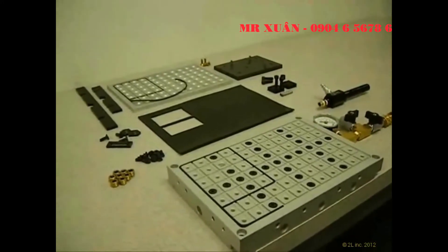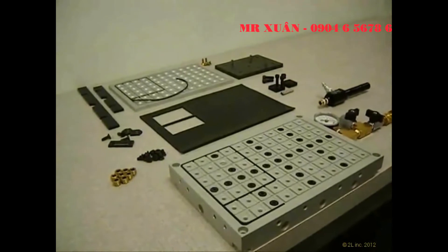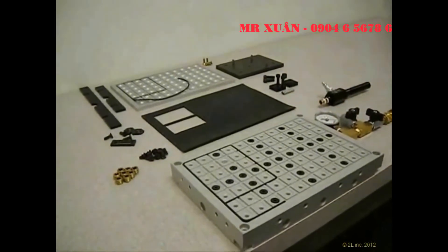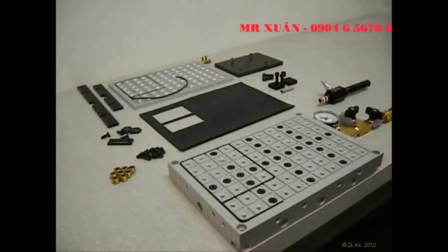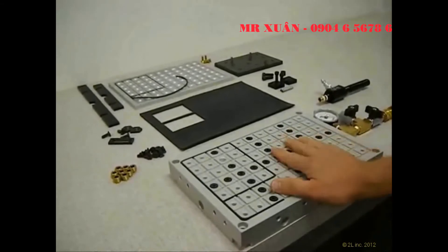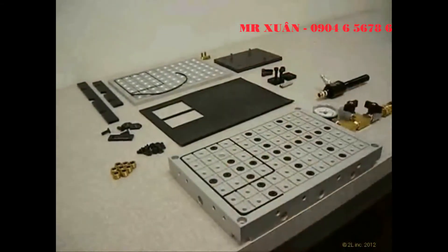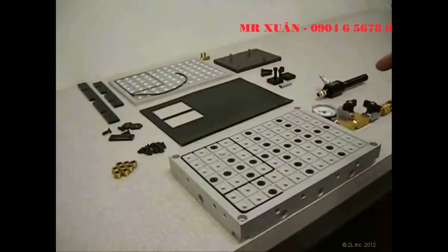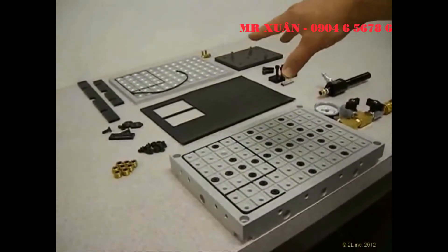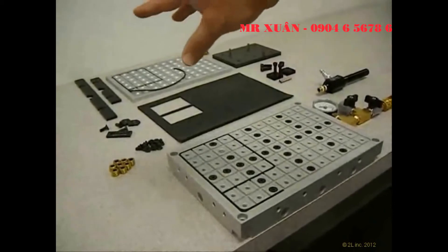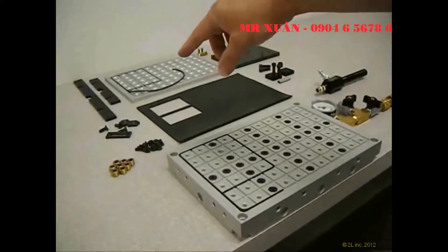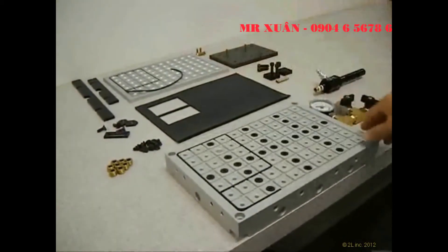To summarize our vacuum chuck demonstration today, 2L offers the vacuum chucks in four pre-configured kits. There's a one pallet system, a two pallet system, a three pallet system, and a four pallet system. There are accessories available: gasket sheets, top plates, different work holding accessories like edge clamps and work stops.